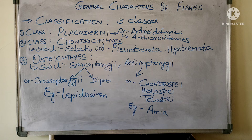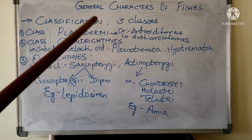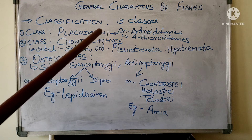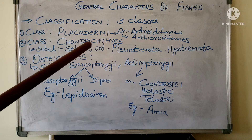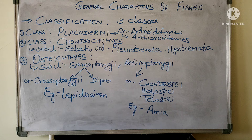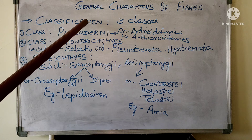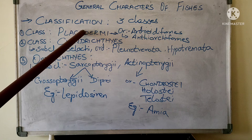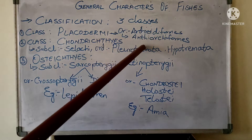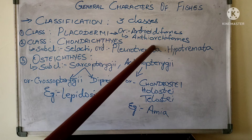Coming to class Placodermi — placoderms are the earliest jawed fishes. They have a bony head which acts like a shield for them. These are now extinct. Placodermi is further divided into two orders: Arthrodiformes and Antiarchi. These two orders are only known in the form of fossils.